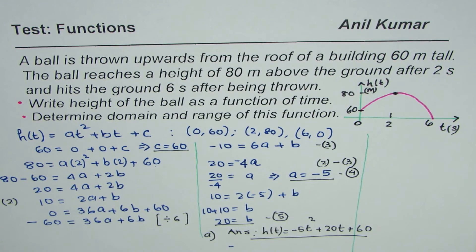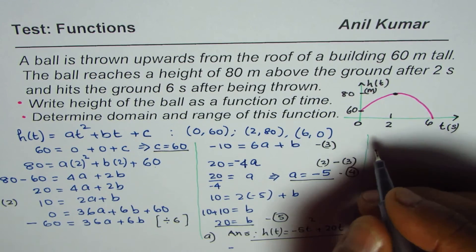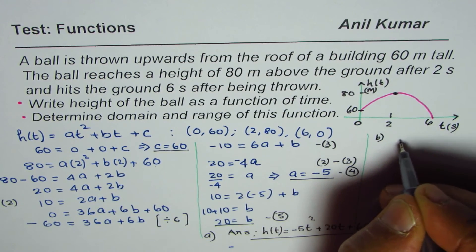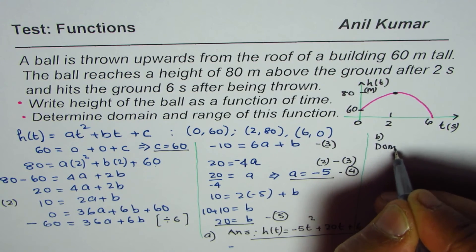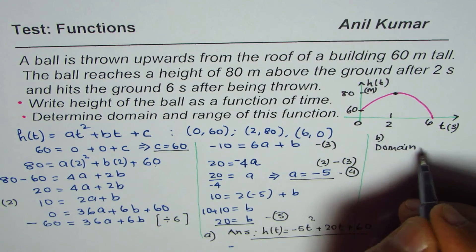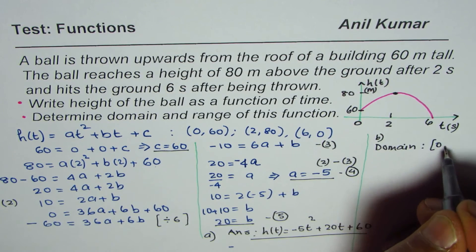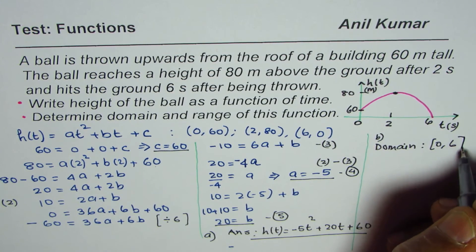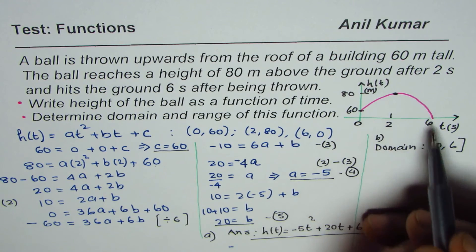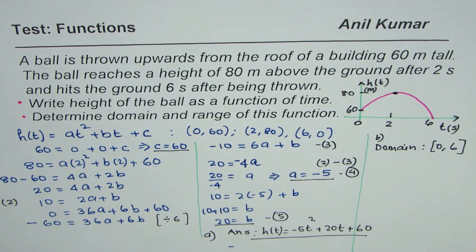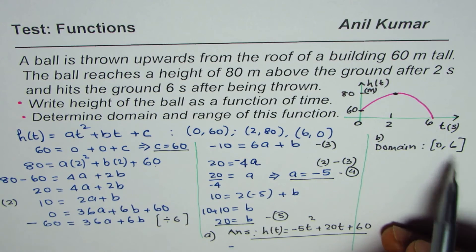Part (b) asks us to determine the domain and range of this function. The domain is the set of possible values for time during the flight of the ball, which is from t = 0 to t = 6. So the domain is [0, 6].